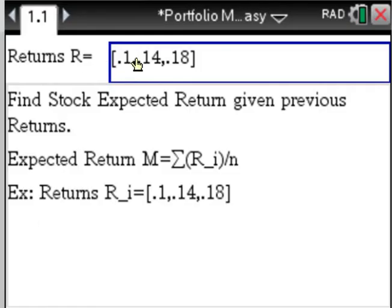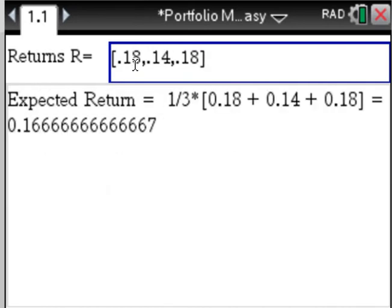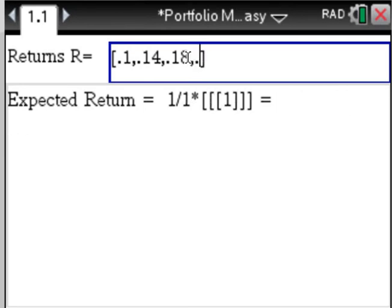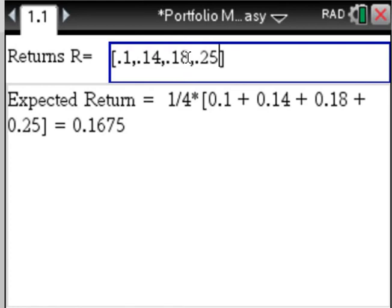Expected return: enter the returns of your stock and average them, and all of a sudden you have your expected return, always correct. You add another one, 25 percent or 0.25, and the expected return changes correctly right away.